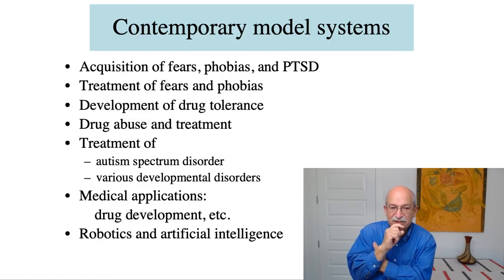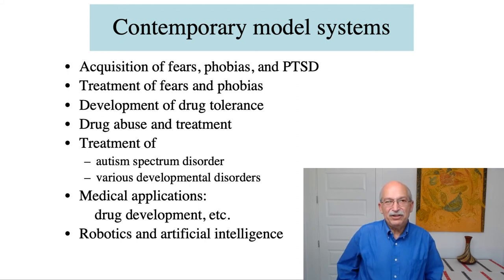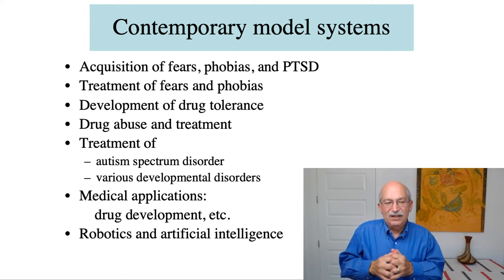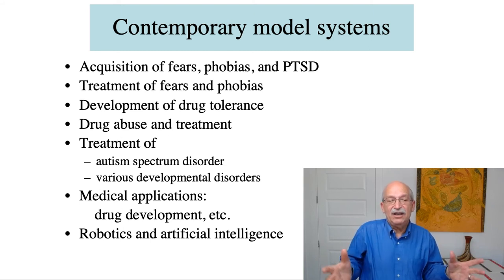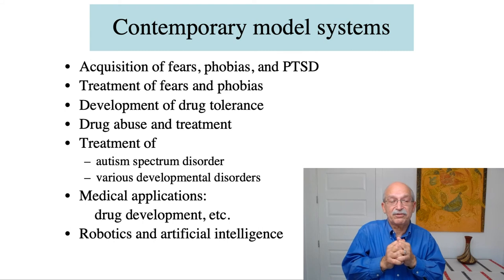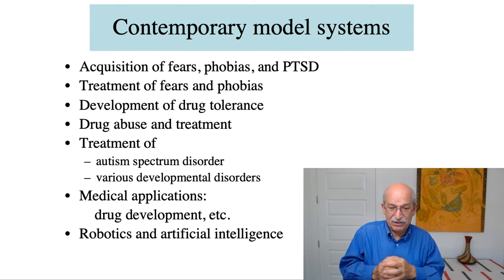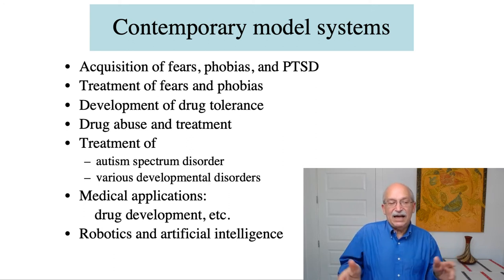A partial list of areas in which animal research on conditioning has been used to better understand human problems includes: the acquisition of fears, phobias, and post-traumatic stress disorder, which has been heavily guided by animal research. The treatment of fears and phobias in people also originates from this work. Drug development and research on drug tolerance relies heavily on animal work, and tactics for the development of treatment of drug abuse are often based on animal research. Already mentioned is autism spectrum disorder, and there are lots of medical applications as well.